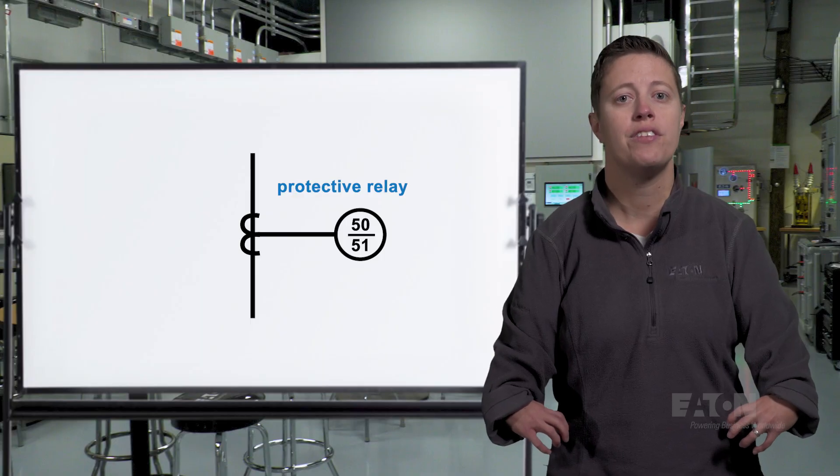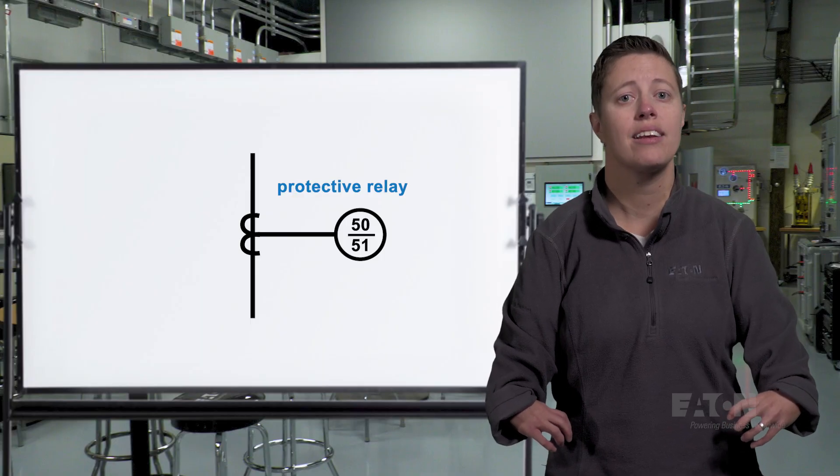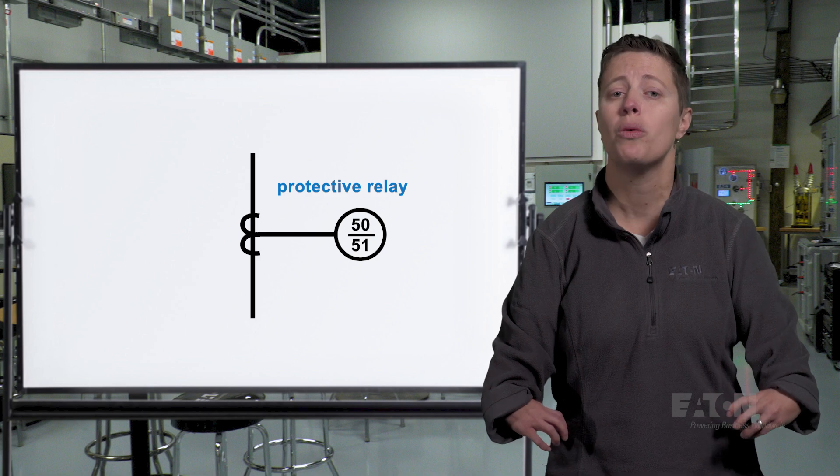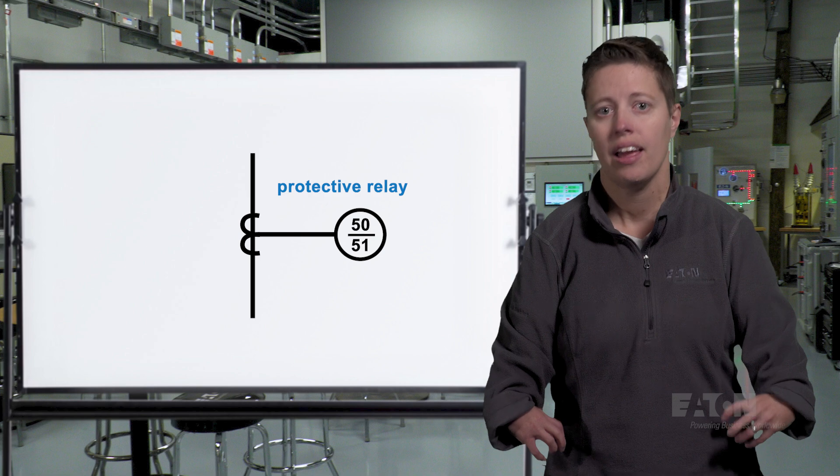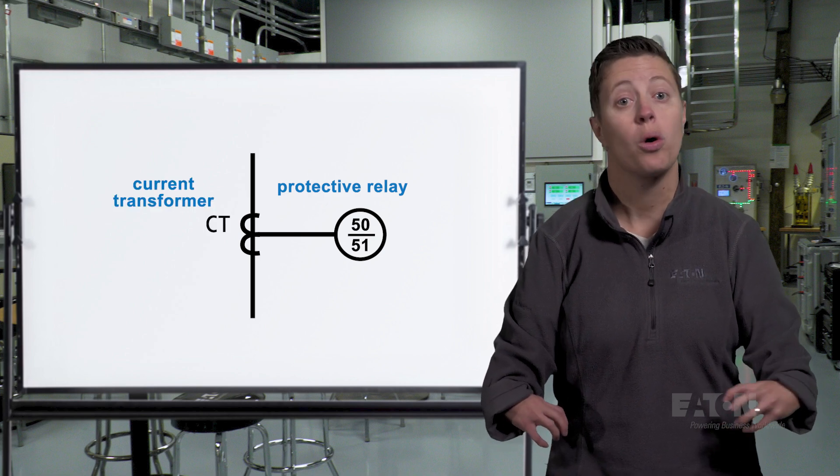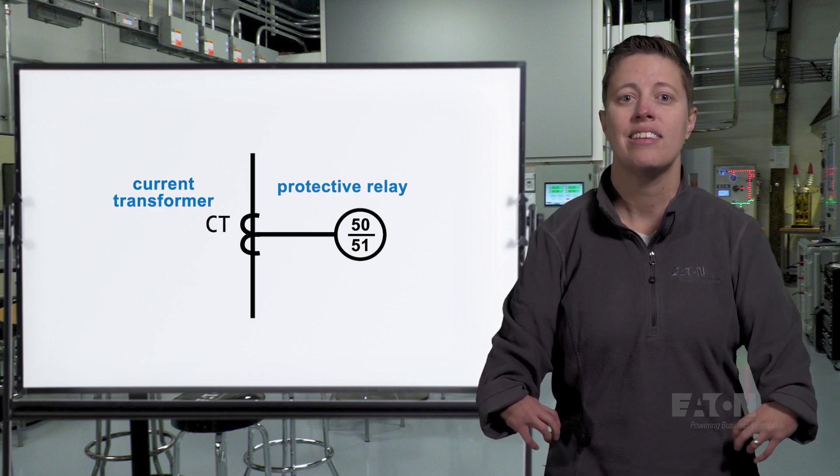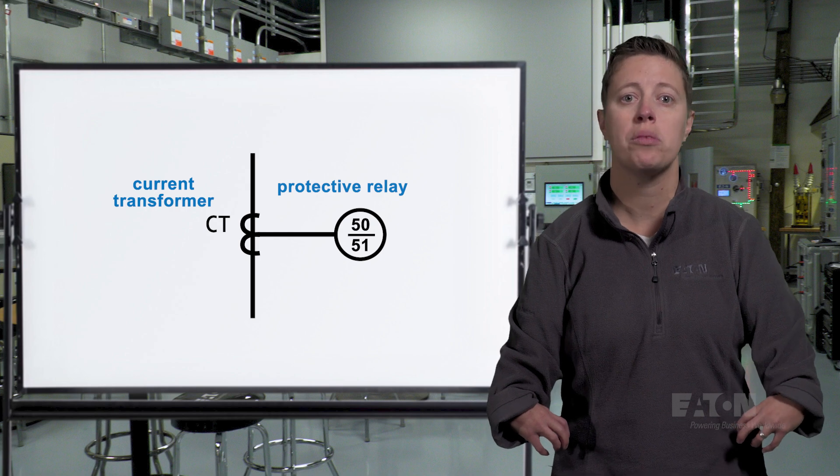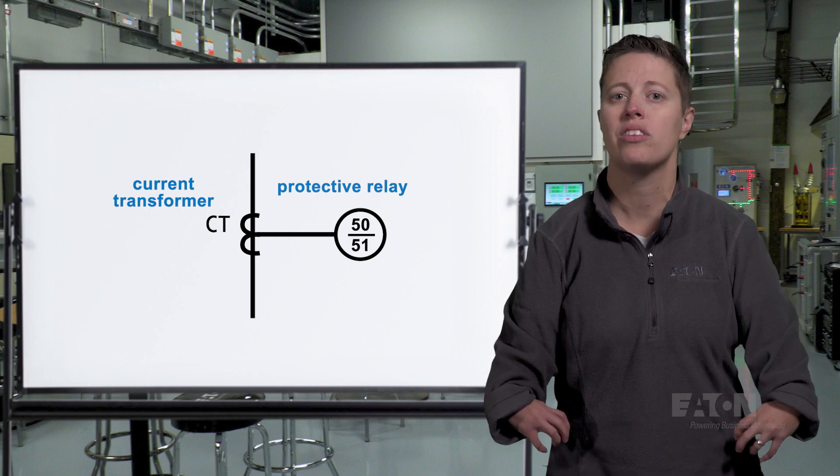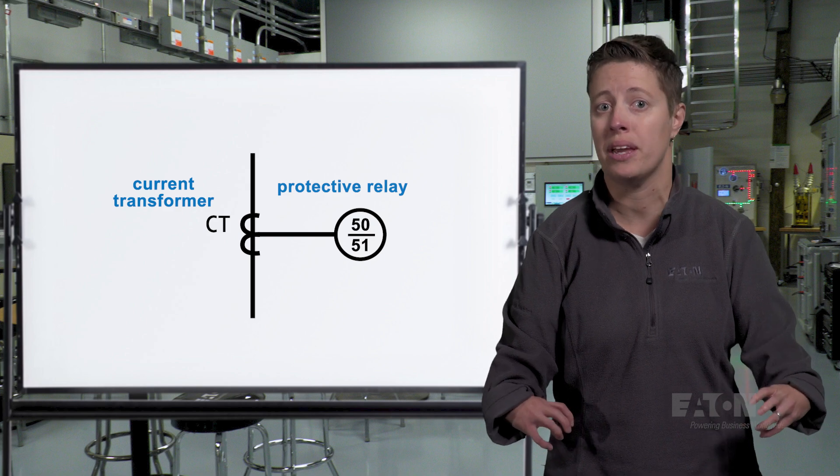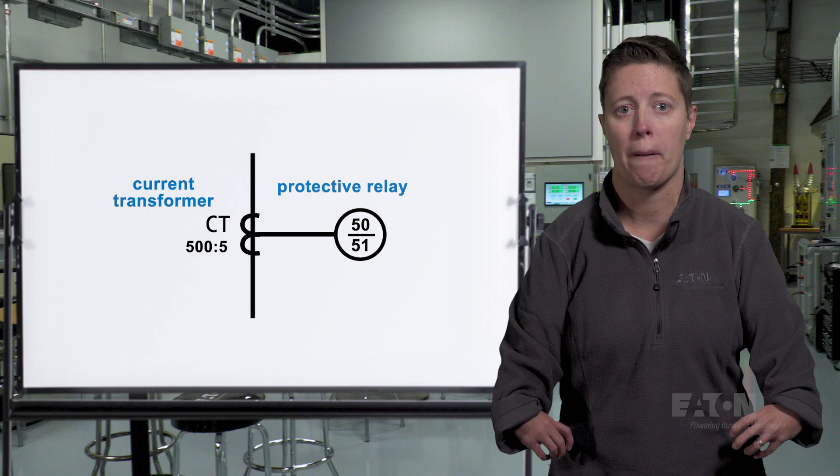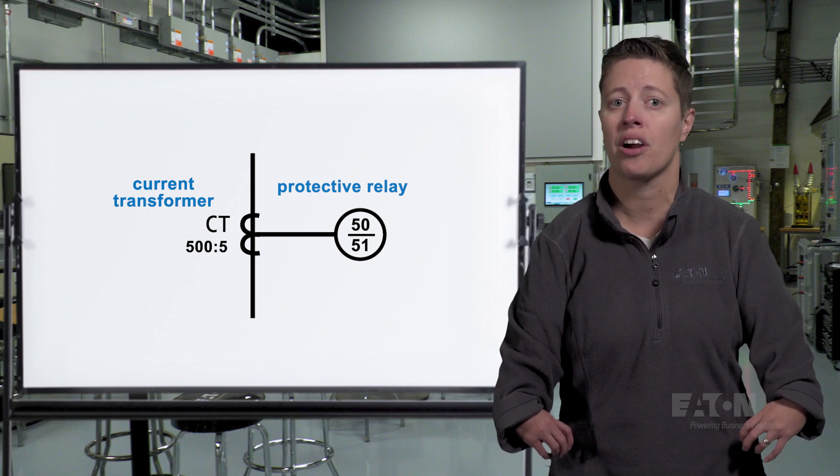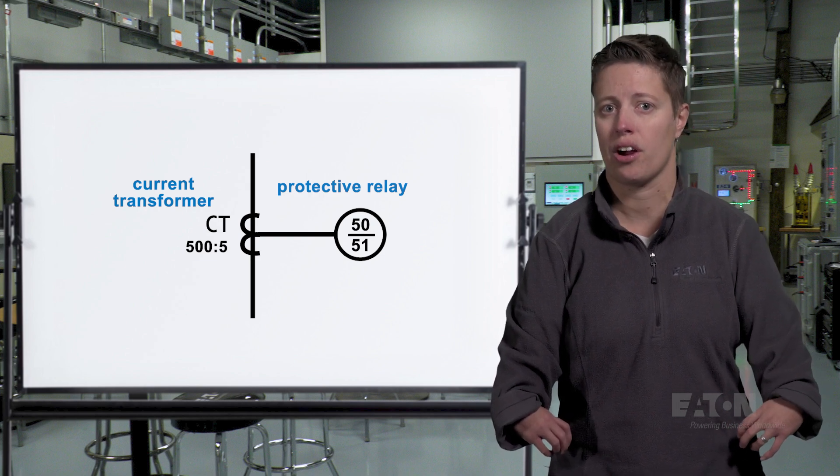You will notice the 50-51 notation is connected to the main circuit through two half circles end-to-end with a line extending from the center. This is a current transformer or CT. The CT takes line current and transforms it to a lower amperage to be safely read by devices like protective relays and meters. The CT ratio may be noted on the single line as well. This is the ratio of line current to CT secondary current.